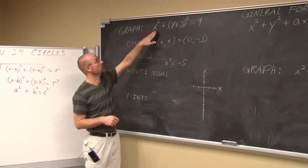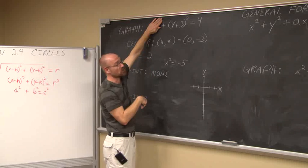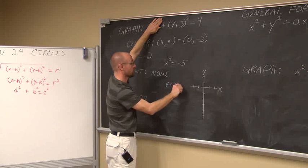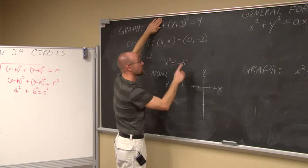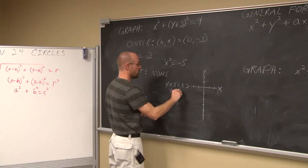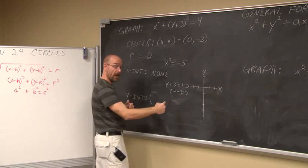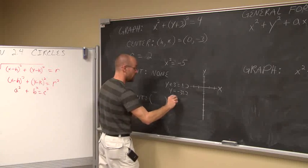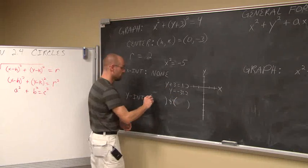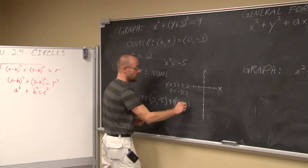Let's find the y-intercepts by setting x equal to 0. We have a perfect square equal to 4, so we can use the square root method: y plus 3 equals plus or minus the square root of 4, which is 2. Subtracting 3 from both sides gives y equals negative 3 plus or minus 2. That's two separate values: negative 3 plus 2 equals negative 1, and negative 3 minus 2 equals negative 5. So I have two y-intercepts.